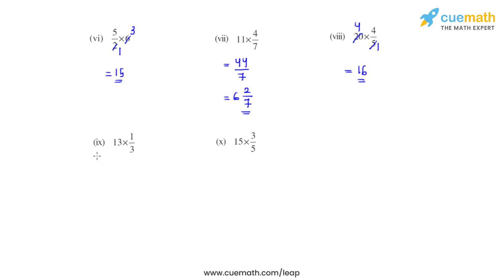Coming to the ninth bit, we have 13 times 1 over 3. The product will be 13 over 3, that is 13 divided by 3. On division we get the quotient as 4 and the remainder as 1. So the mixed fraction for this will be 4 and 1 third.